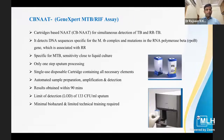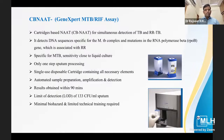CBNAAT is a cartridge-based NAAT for simultaneous detection of tuberculosis and Rifampicin-resistant tuberculosis. It detects DNA sequences specific for Mycobacterium tuberculosis complex and mutations in the RNA polymerase beta gene associated with Rifampicin resistance. It is specific for mycobacteria and sensitivity is close to liquid culture. Only one step sputum processing is required, minimal biohazard, and limited technical training is needed. Results are obtained within 90 minutes.